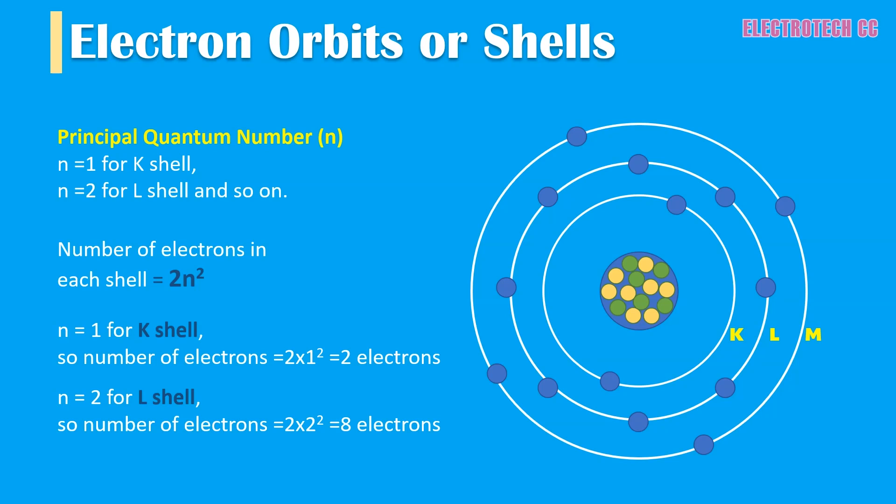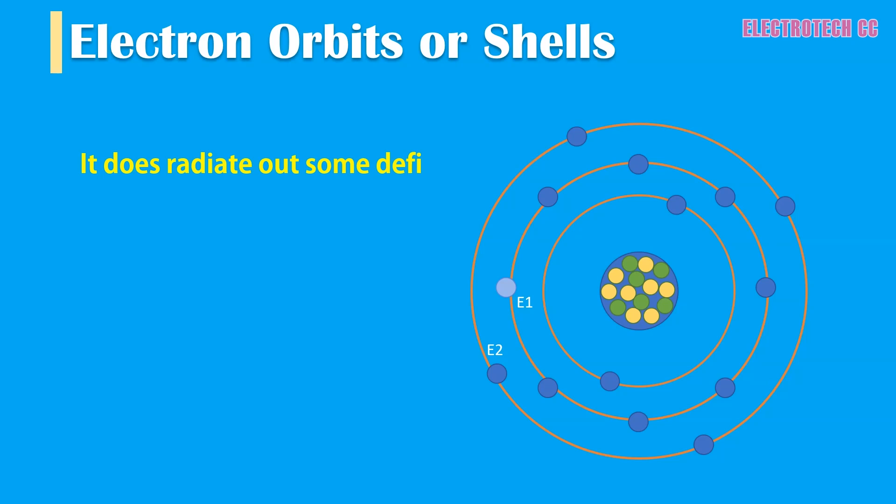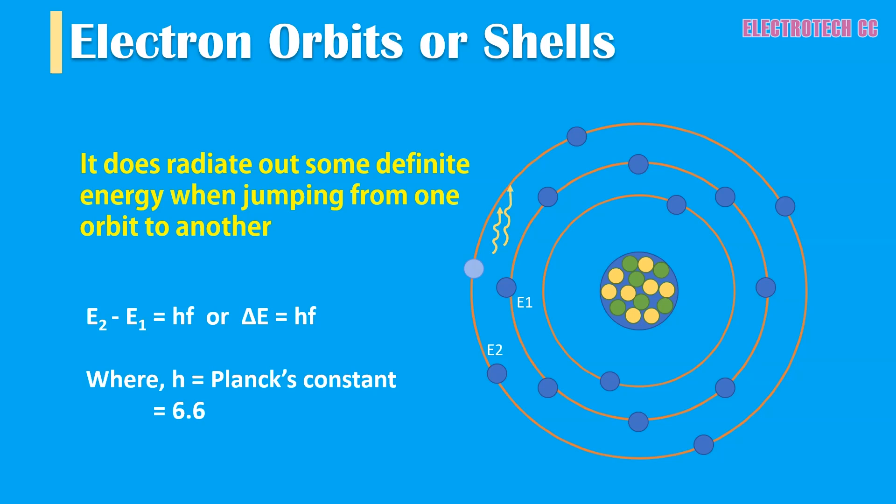Each electron orbit is associated with a certain defined amount of energy. While revolving in its permitted orbit, an electron does not radiate out any energy, but it does radiate out some energy when jumping from one orbit to another. If E2 and E1 are the energies corresponding to the two orbits before and after the jump, the frequency of emitted radiation is given by the relation E2 minus E1 equals hf, or delta E equals hf, where h is Planck's constant, equal to 6.625 times 10⁻³⁴ joule-seconds.